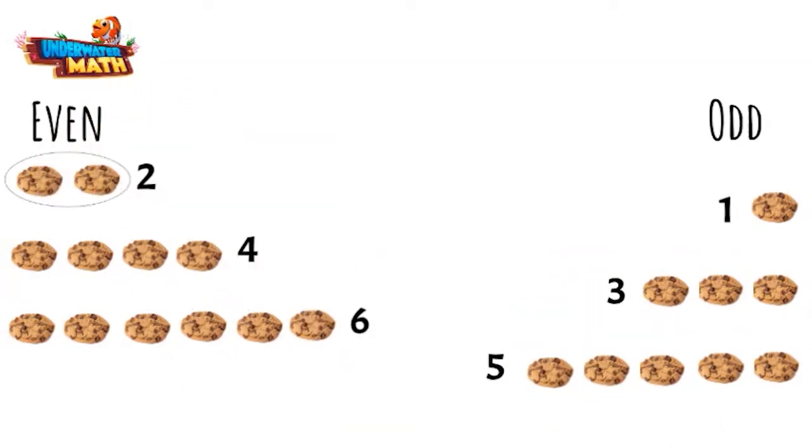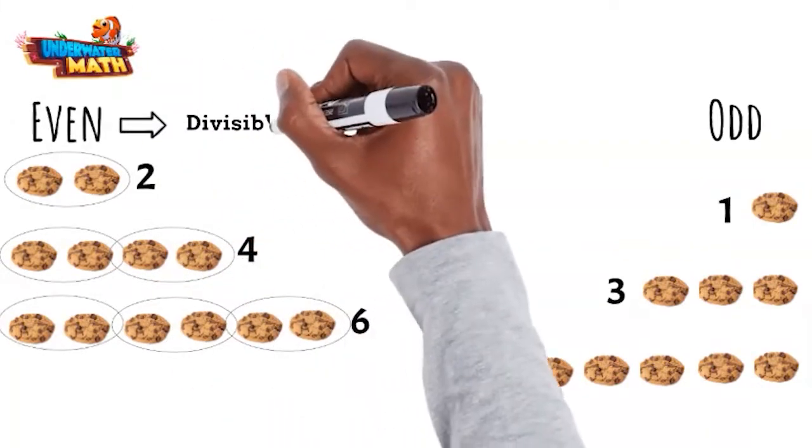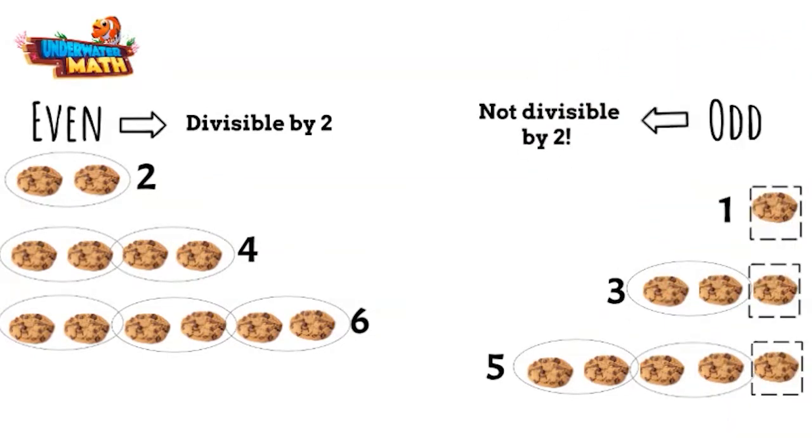With even numbers, you can split the number evenly into pairs, like this. This means it is divisible by 2. Odd numbers always have one left over when trying to split up into pairs. Odd numbers are not divisible by 2.